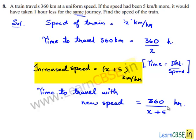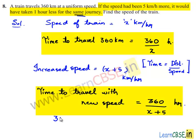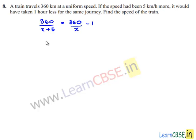According to the given condition, if the speed had been 5 km per hour more, the train would have taken 1 hour less. So we can write: 360 divided by (x plus 5) equals 360 divided by x minus 1. Rearranging, 360 divided by x minus 360 divided by (x plus 5) equals 1.